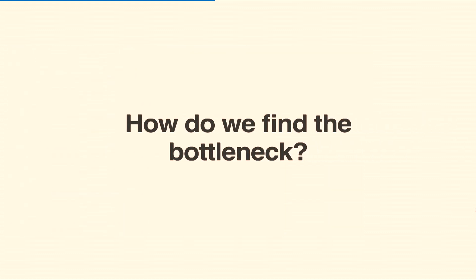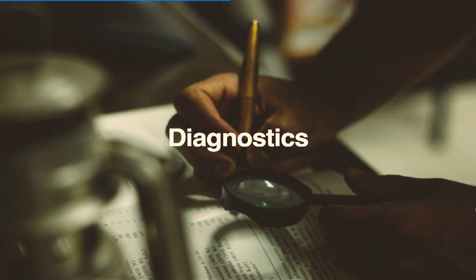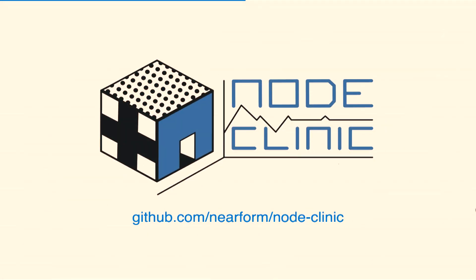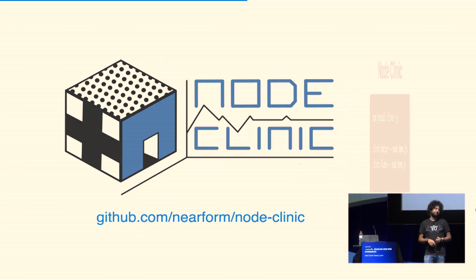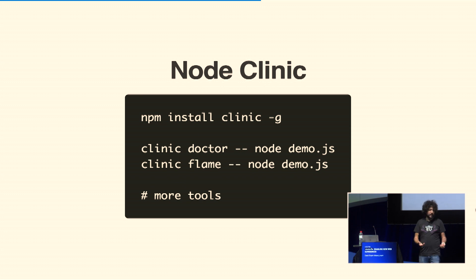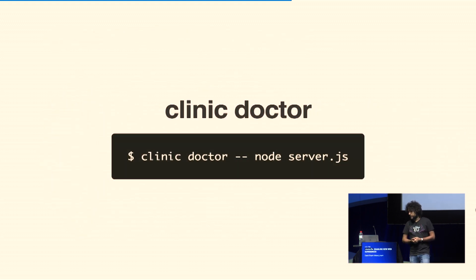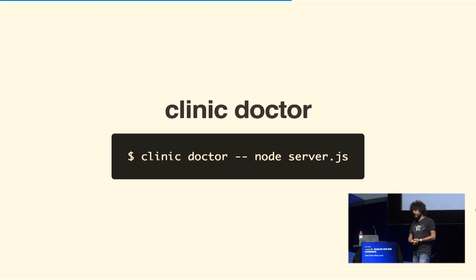So how do we find the bottleneck? You need to gather more diagnostics. Now we have measured, we know our established goal, and we can compute the gap between the two. We can use a new tool we have just released called NodeClinic — you can npm install clinic. This tool has two commands: one is called doctor and one is called flame, and I will show them in a moment.